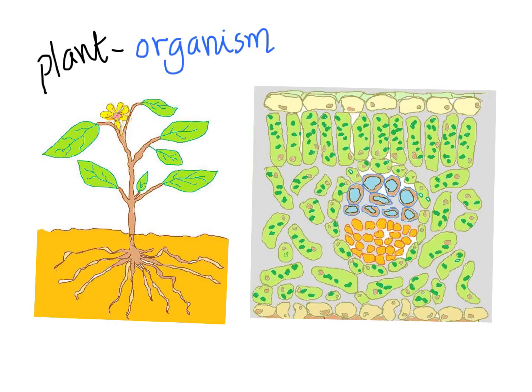So let's have a look at the leaf structure to start with. The leaf, as you know, is an example of a plant organ, which is what we are going to be looking at.